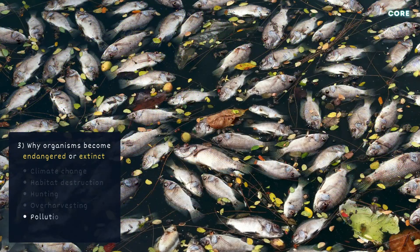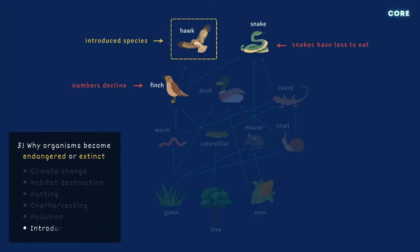Pollution of the air, water, and soil affects the health of plants and animals and their ability to reproduce. Introduced species: an introduced species might consume another animal or another animal's food source, or carry with it a new disease or parasite.